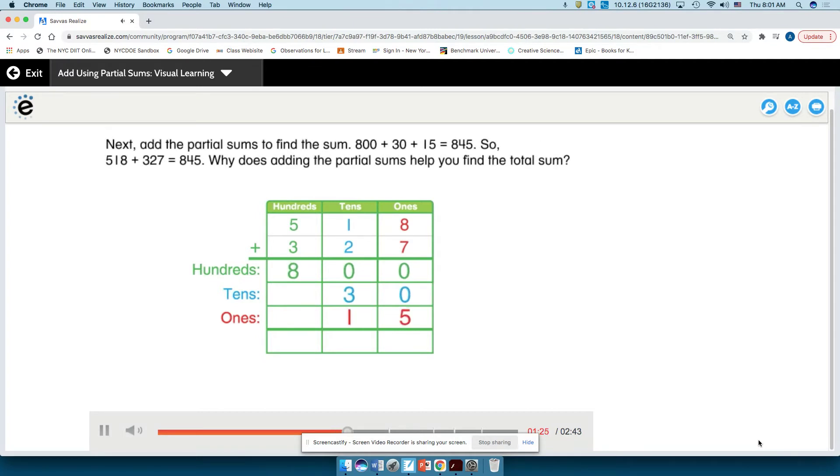Next, add the partial sums to find the sum. 800 plus 30 plus 15 equals 845. So, 518 plus 327 equals 845.